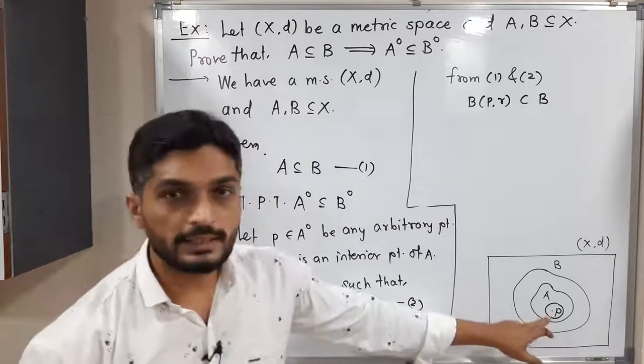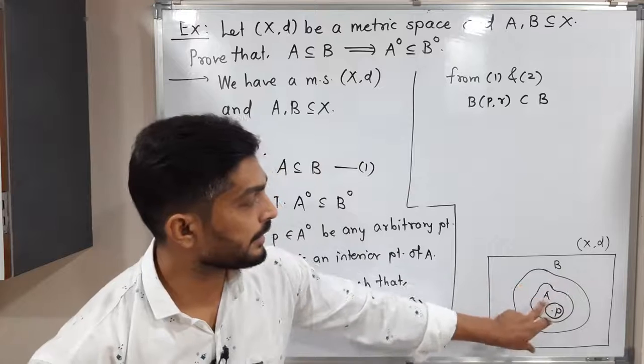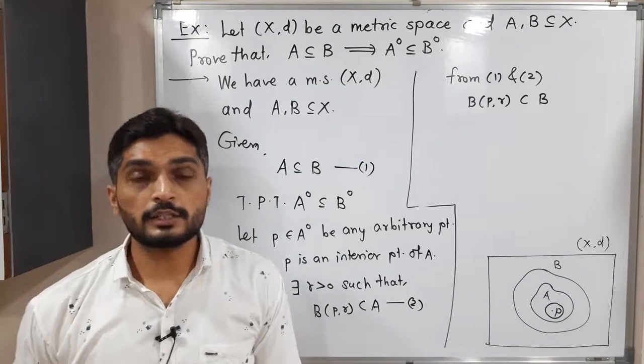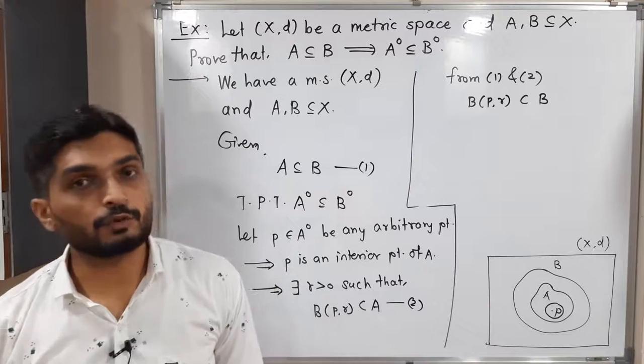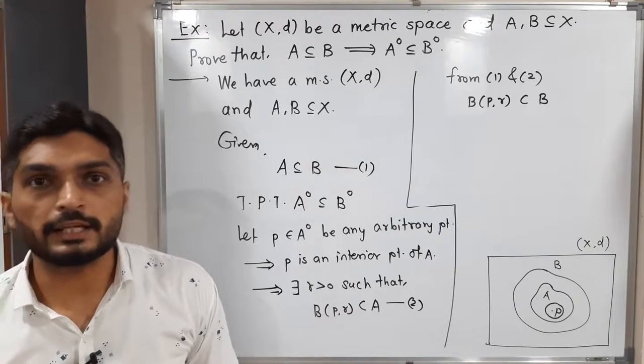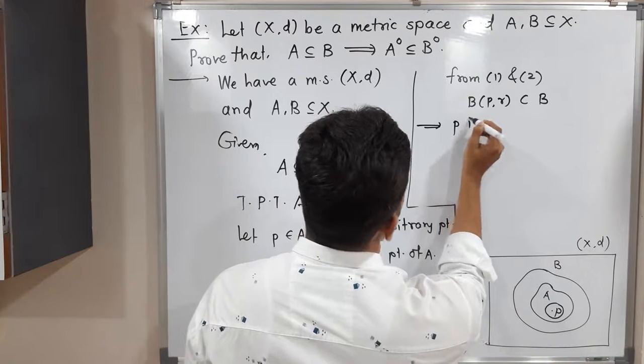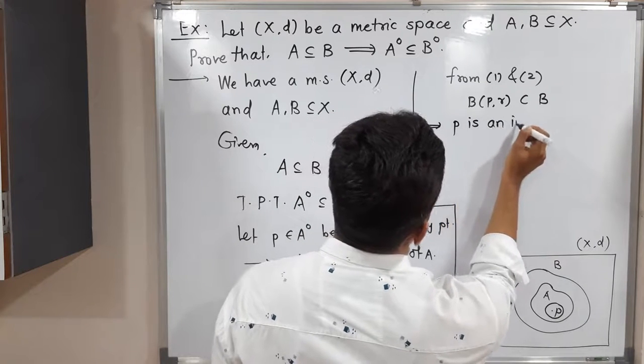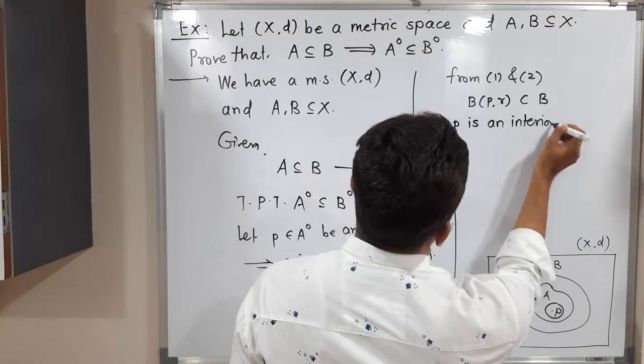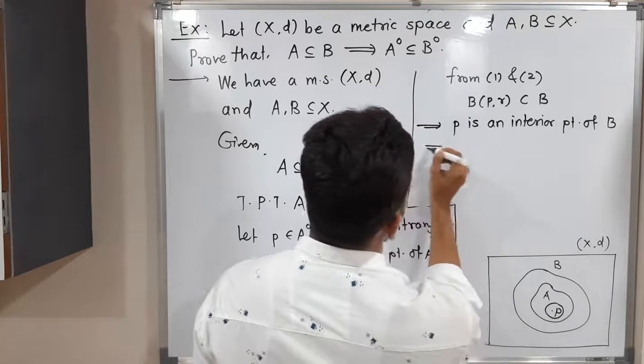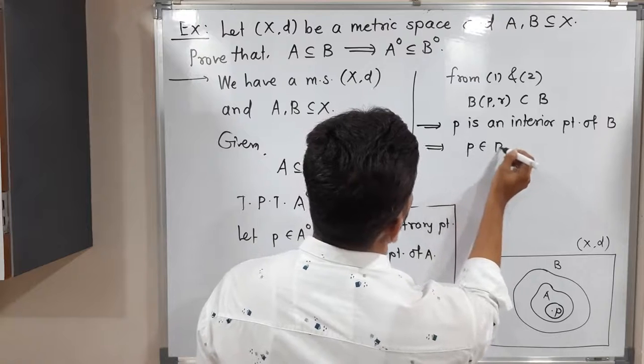In the diagram also you can easily see this ball is a subset of A, A is a subset of B, then this ball is a subset of B. This is the definition of interior point. Therefore we can say P is an interior point of B, which we can denote as P ∈ B°.